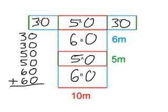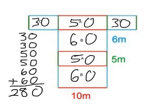Now I've been able to figure out the area of all the different shapes. I have 30, 30, 50, 50, 60, and 60. To find the surface area, all I do is add those all together: 30 plus 30 plus 50 plus 50 plus 60 plus 60, and I get 280 meters squared.